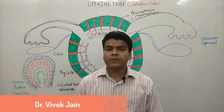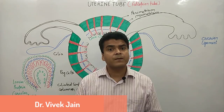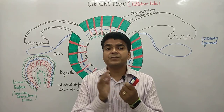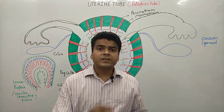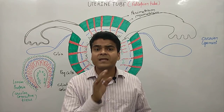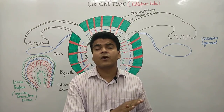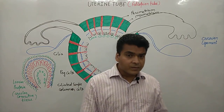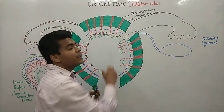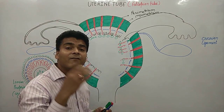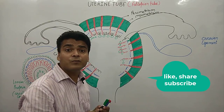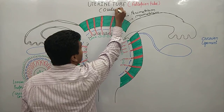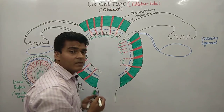Hello everyone, welcome to the channel Tutor Box. In today's class we are going to discuss about the fallopian tube, also called oviduct or uterine tube. This is another structure of the female reproductive system. In an earlier class we already discussed the histology of the uterus; now we are going to discuss about the fallopian tube.